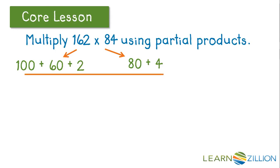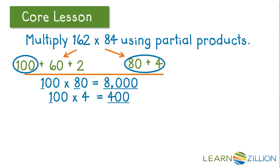To get the final product, we first need to multiply 100 times 80 and times 4. So we will say 100 times 80 is 8,000. 1 times 8 is 8, and then we add our three zeros to create 8,000. 100 times 4 is 400.